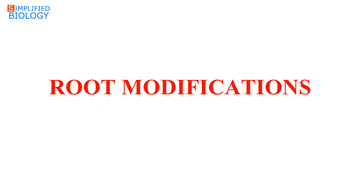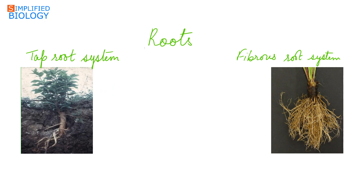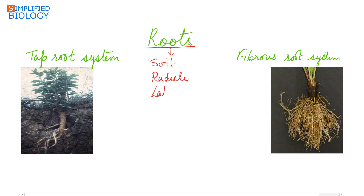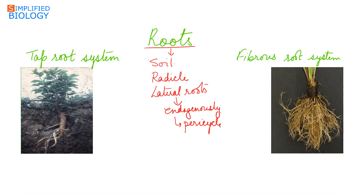Welcome to Simplified Biology. Today's topic is root modifications. Roots are the descending parts of the plant that grow inside the soil, underground. They develop from the radicle of the embryo. They do not possess nodes, internodes, or buds. Lateral roots develop endogenously from the pericycle. Roots possess root hairs that increase the surface area for absorption of water.